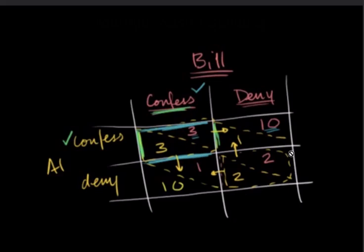And the reason for this is because for Al, confessing is better for him whether or not Bill confesses or denies. And similarly for Bill, confessing is better whether or not Al confesses or denies. So they'll both confess and get three years in prison, and indeed that is our single Nash Equilibrium.